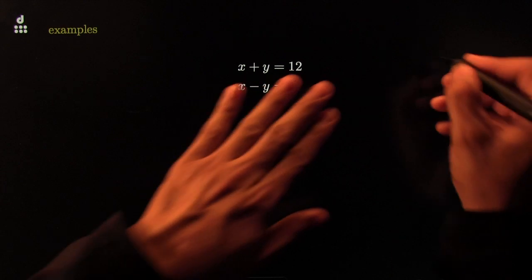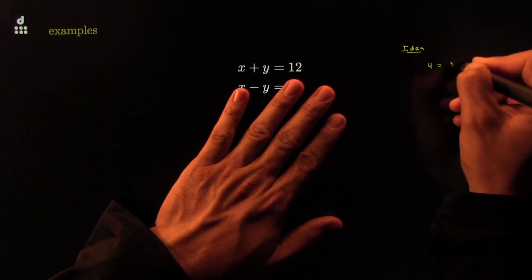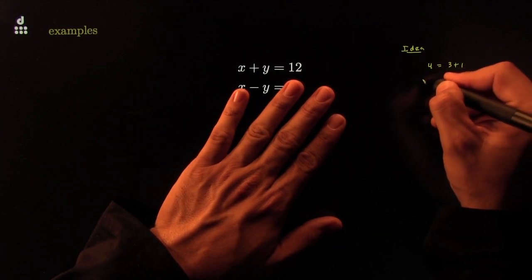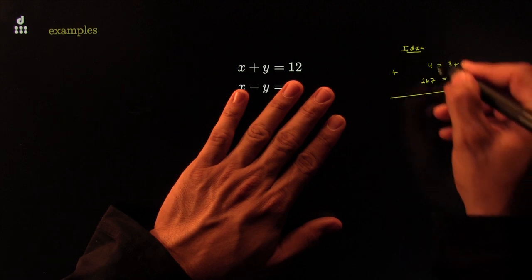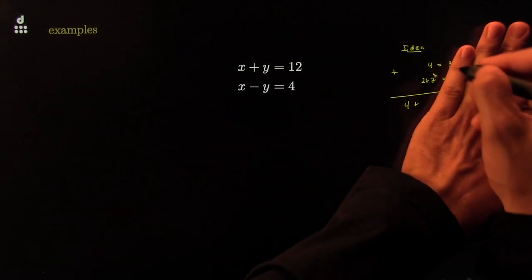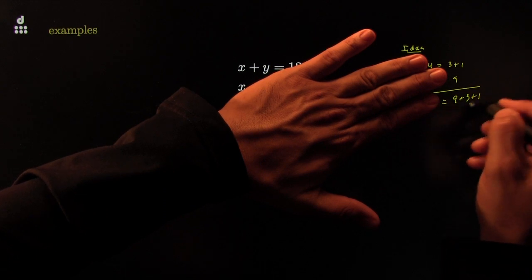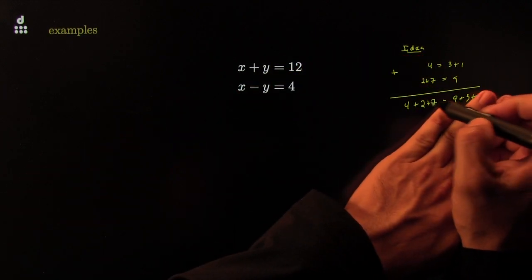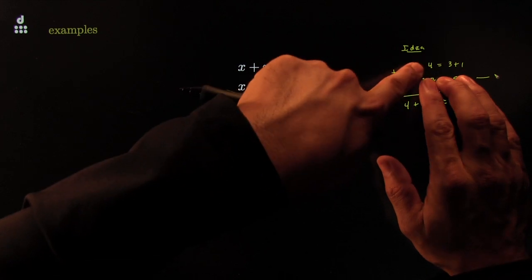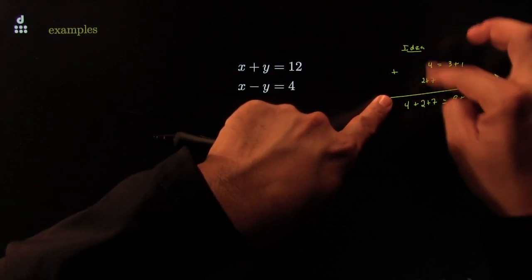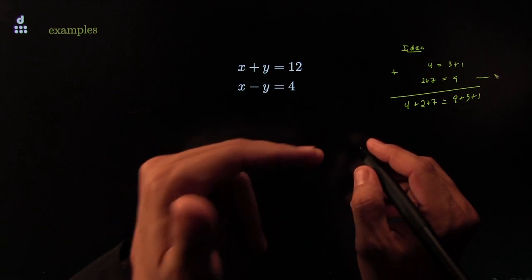The idea goes something like this. Suppose I know that 4 is the same thing as 3 plus 1, and I also know that 2 plus 7 is equal to 9. The idea of adding the two equations means I add all these: I add the 4 on that side and the 2 on that side and the 7 on that side, and I should get the same as the right-hand side — a 9 plus a 3 plus a 1. This side gives you 13, while that side gives you 6 plus 7, which is also 13. Because if you add the same amount on this side as you did on that side, adding these amounts would be the same as adding those amounts. That's just a rough idea of why it might be true.